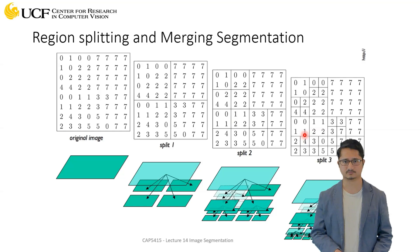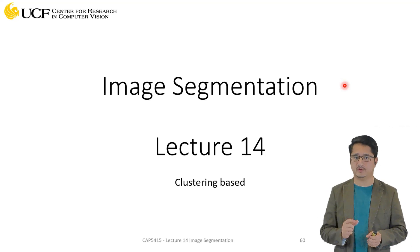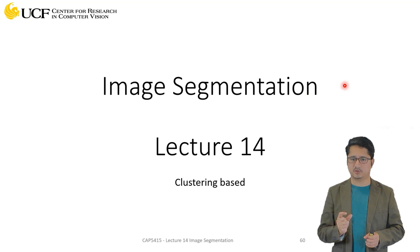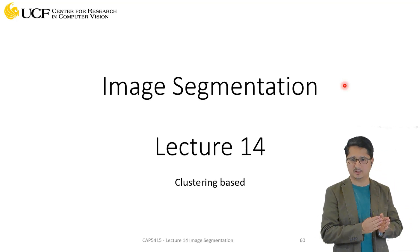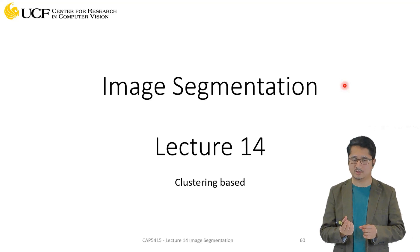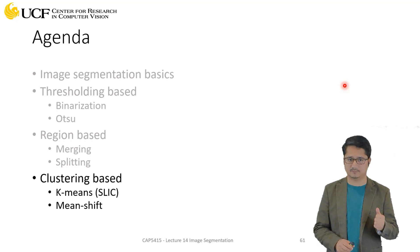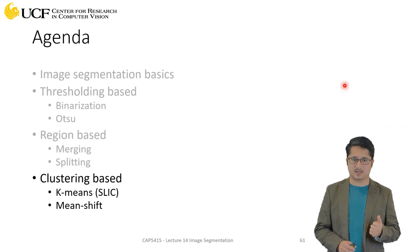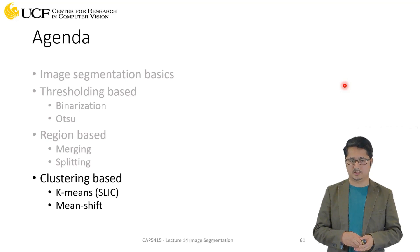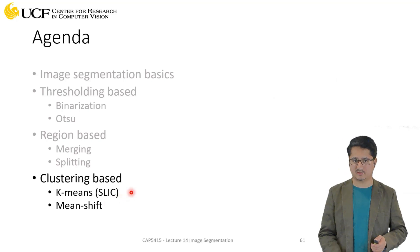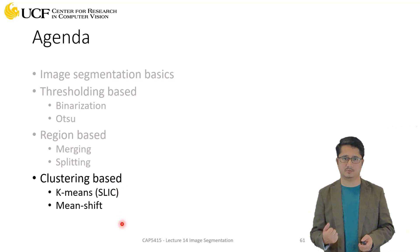The next topic is a continuation of image segmentation focusing on clustering. Clustering is a well-known machine learning algorithm, and we'll see how it can be used specifically to solve image segmentation. We'll talk about two different algorithms: K-means clustering — specifically the variant called SLIC (Simple Linear Iterative Clustering) for image segmentation — and mean shift. We'll see the pros and cons of each.